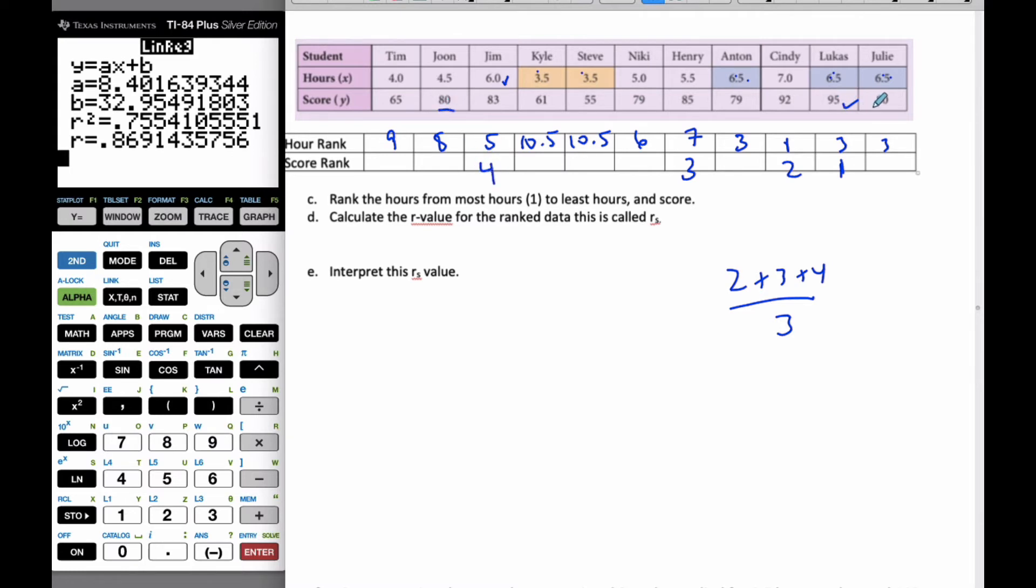This is 5 and 6, so they're going to share it, 5.5 and 5.5. If I keep on going, 79 is 7. This is 79 and 79, so this is 7, this is 7, this is 8, so I have to share them, so it's 7.5, 7.5. Then I'm on to 9, which is here, and then 10, and then poor Steve got the lowest score of 11.